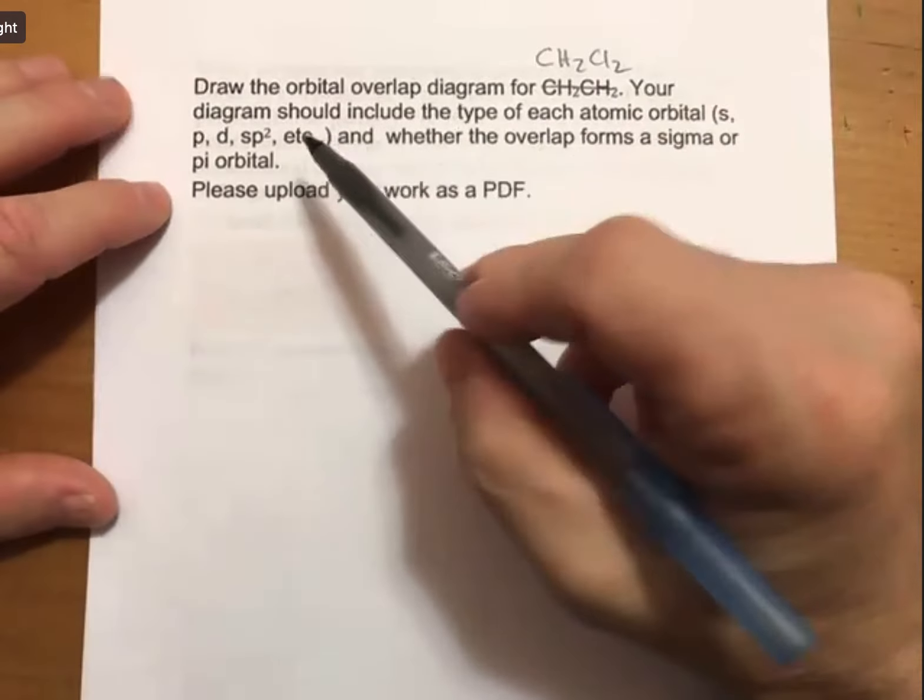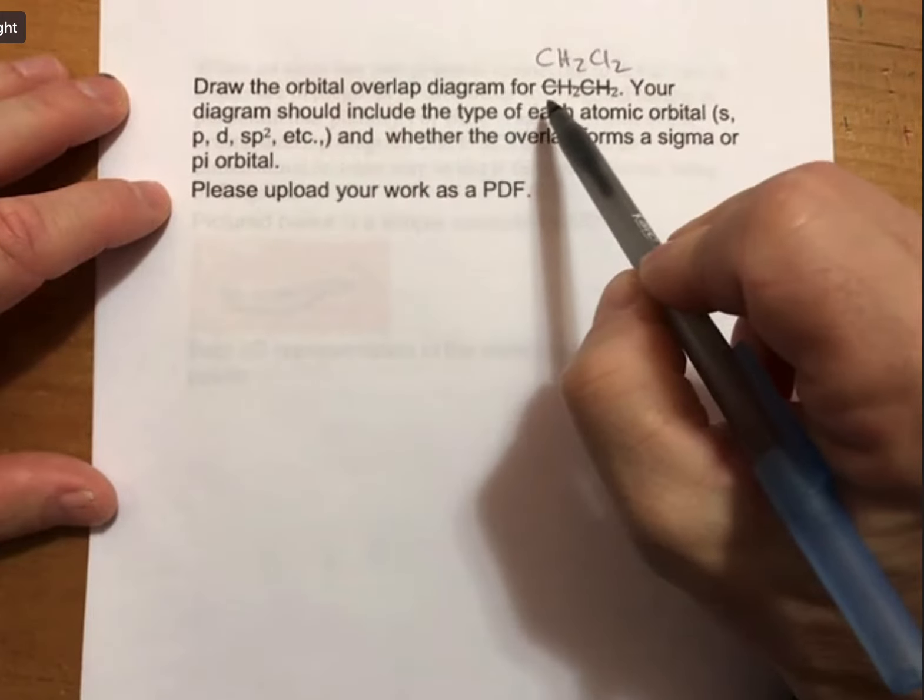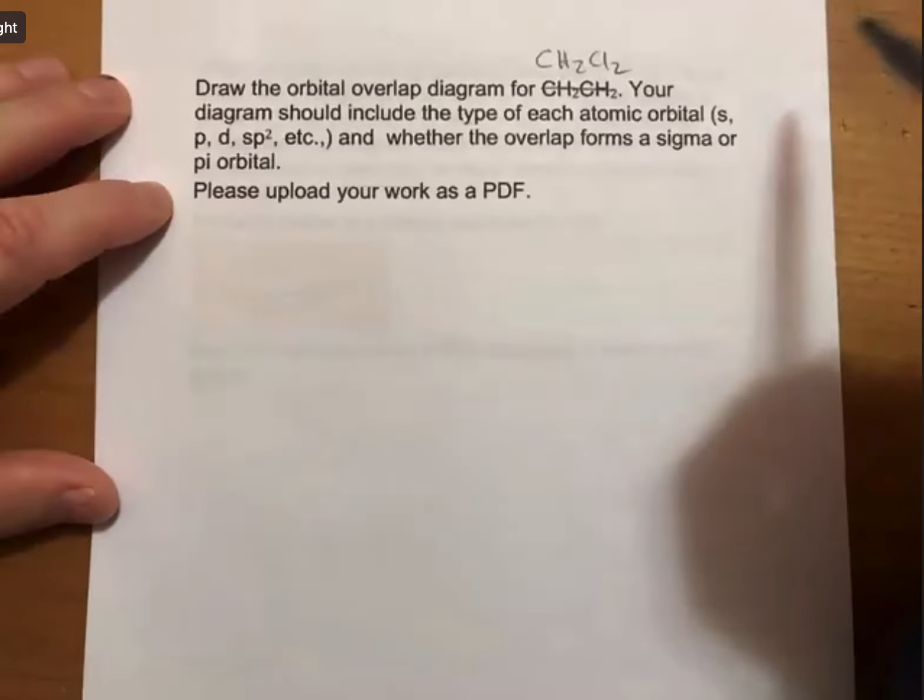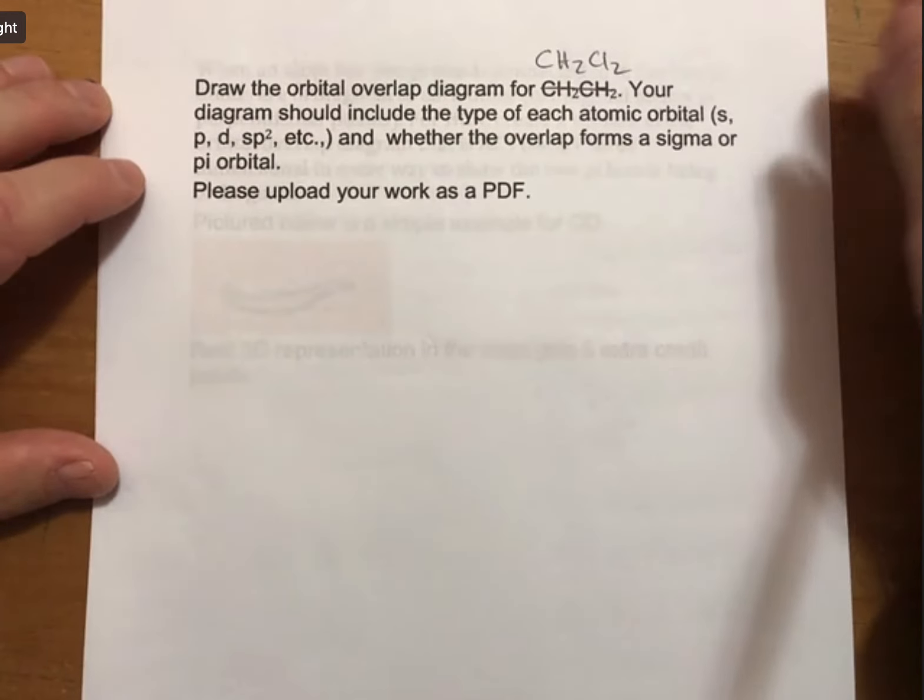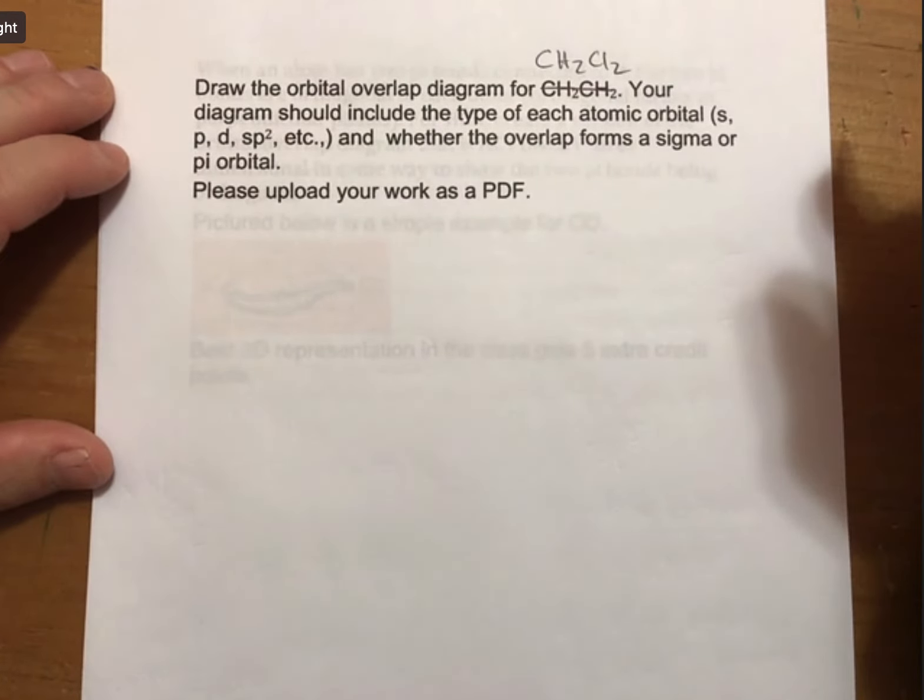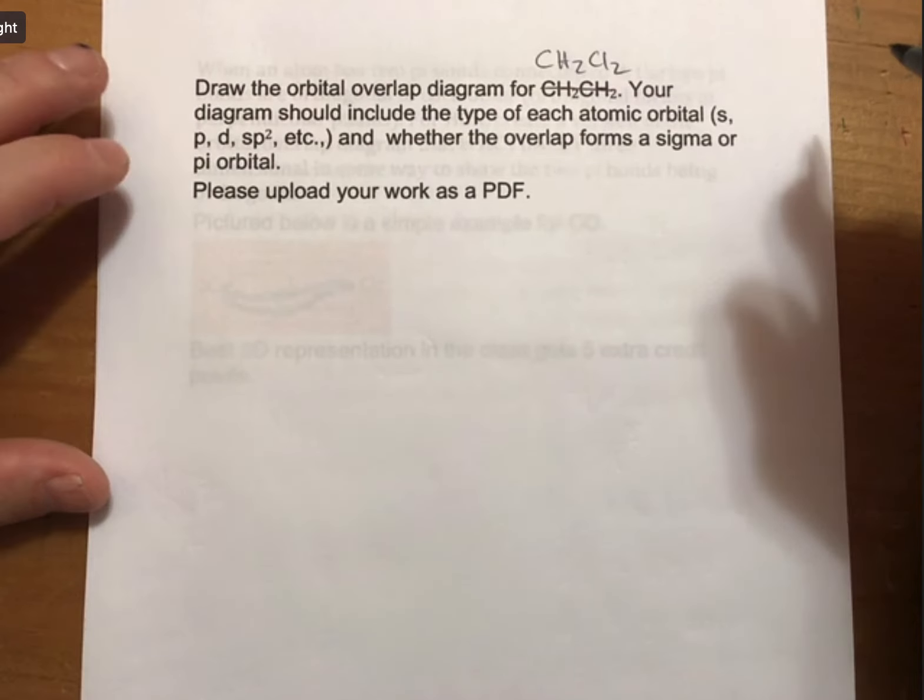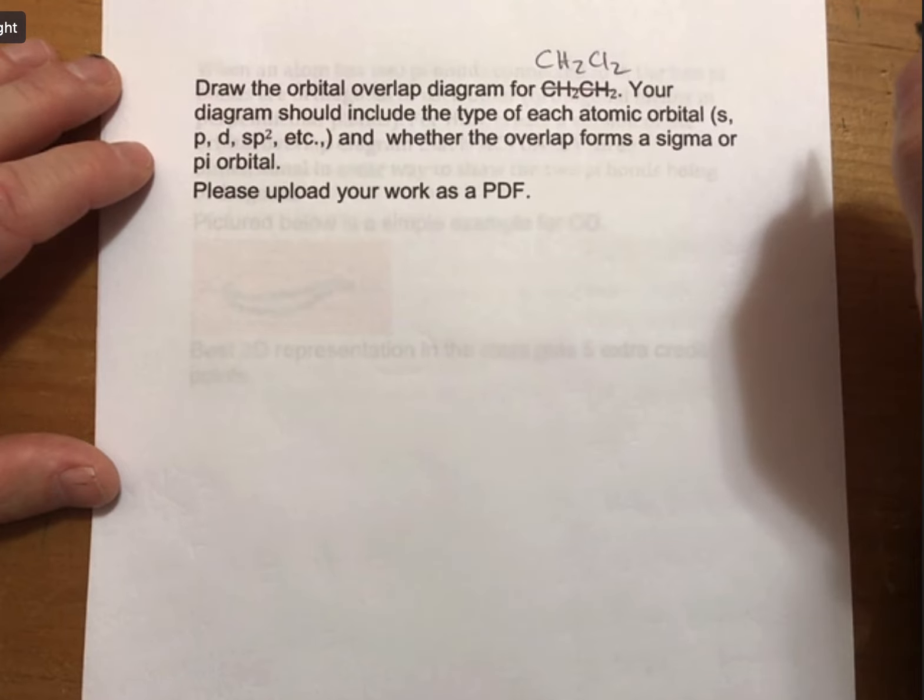We've got to draw the orbital overlap diagram for CH2Cl2. Your diagram should include the type of each atomic orbital, s, p, d, sp squared, etc., and whether the overlap forms a sigma or pi orbital. Please upload your work as a PDF.